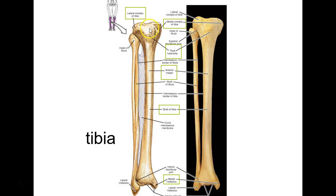The thing we're leaving out on the tibia is the anterior margin or anterior crest — that's what you accidentally hit on the coffee table. So on the tibia: two condyles, tibial tuberosity, medial malleolus, and the anterior crest. On the fibula you really only have two things: the head and the lateral malleolus, not counting the diaphysis or shaft.